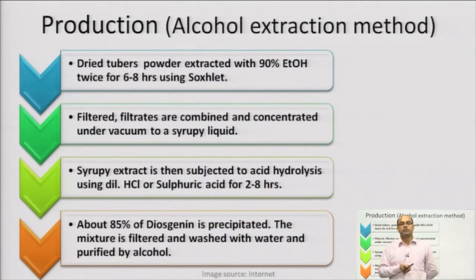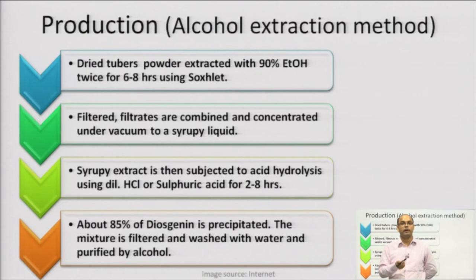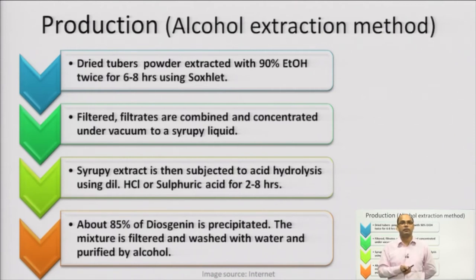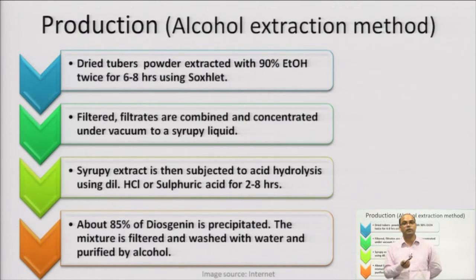Moving to the extraction methods — there are two extraction methods we are going to discuss. Since diosgenin is soluble in organic acids and acetic acid, acids are involved in the extraction. The first is the alcohol extraction method. Here, we take the dried tuberous root powder and extract it with 90% ethanol twice, for a time period of around 6 to 8 hours using a Soxhlet apparatus. After 6 to 8 hours of Soxhlet extraction, the mixture is filtered and the filtrate is concentrated under vacuum to a syrupy liquid using a rotary vacuum evaporator.